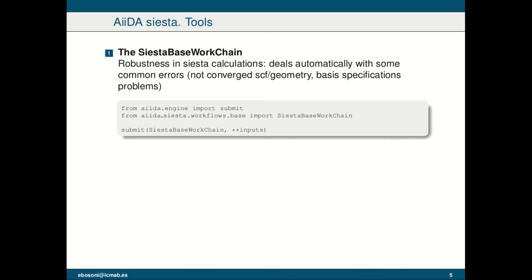So it restarts the calculation automatically without intervention of the user. The way we submit the SiestaBaseWorkChain is the common way that AiiDA provides, just through the submit function where we pass the work chain and then the list of inputs — the pseudopotentials, the structure, and so on.